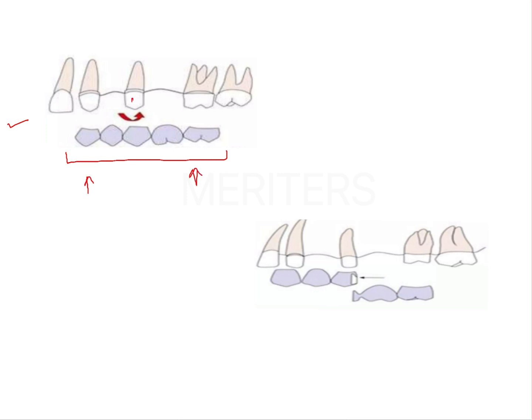When this starts acting as a fulcrum, it might cause damage to your anterior most abutment. Damage like it may cause dislodging of your retainer from this abutment.